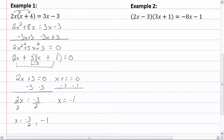In our second equation, or example here, we are going to distribute, or FOIL. So we're going to get 6x squared, plus 2x, minus 9x, minus 3, equal to negative 8x, minus 1.